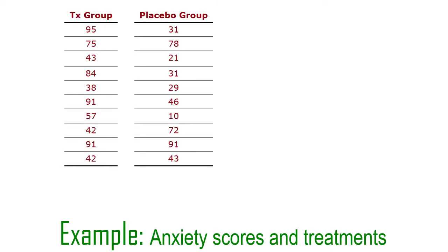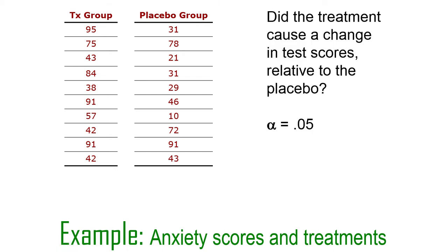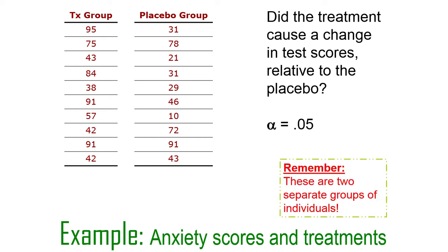Here's an example: anxiety scores and treatments. The treatment group gets an actual treatment for their anxiety; the placebo group gets a placebo — in therapy, often just talking to somebody but not about your symptoms. Did the treatment cause a change in test scores different from the placebo? These are two separate groups. Let's assume that these anxiety scores represent lack of anxiety — so higher scores mean you're less anxious, a happier person.